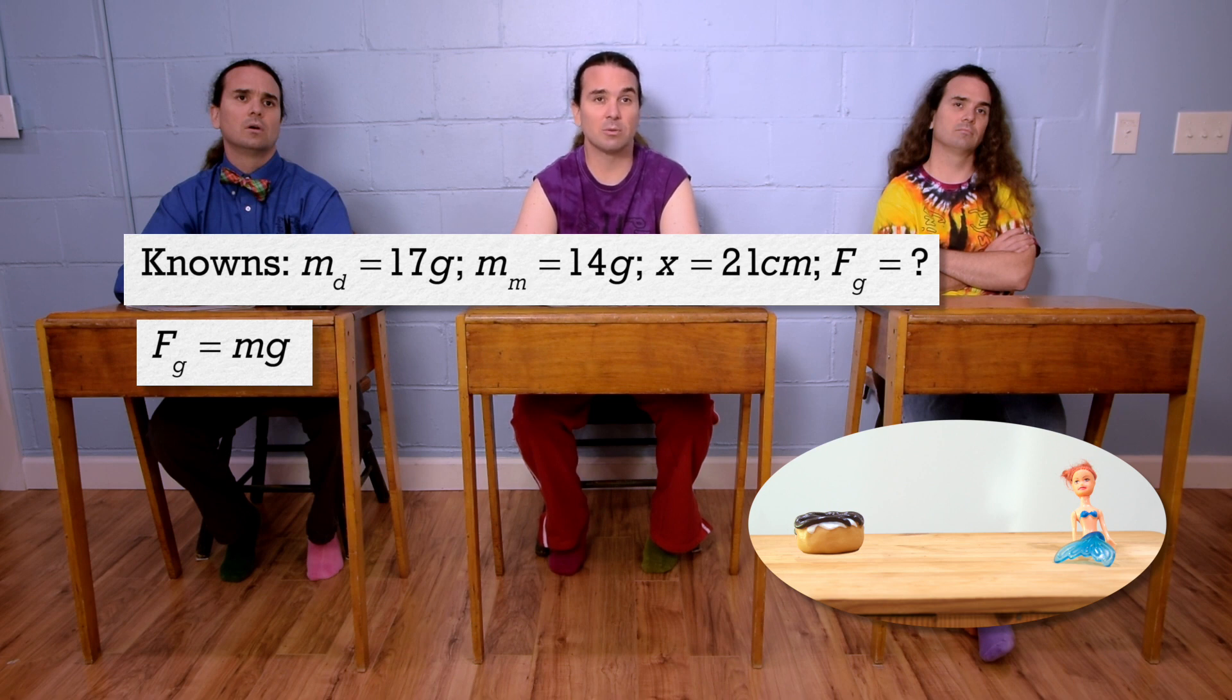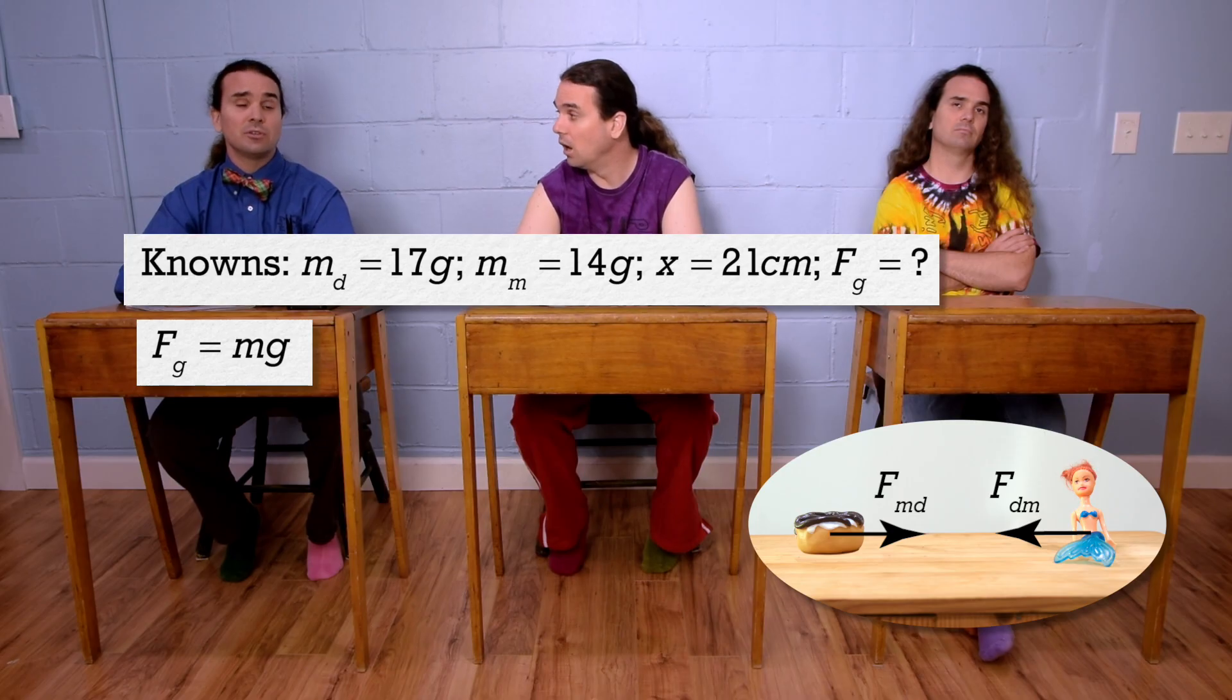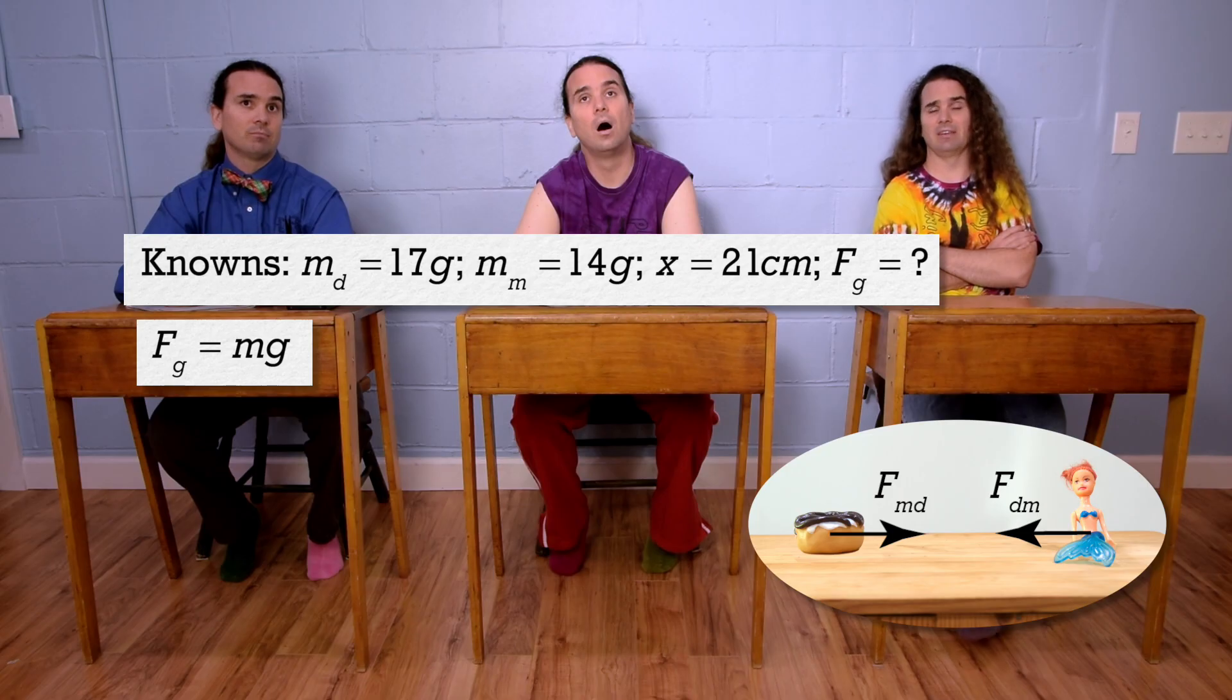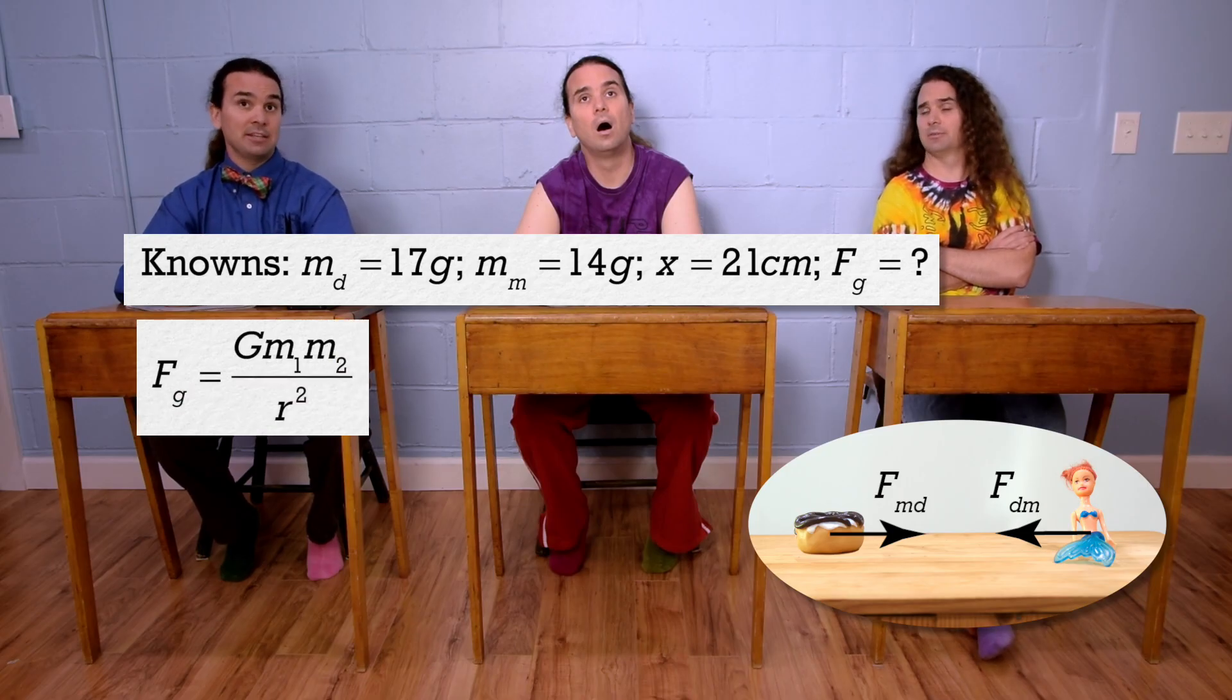We need the force of gravitational attraction between the mermaid and the donut. Yeah, we need to use Newton's universal law of gravitation. The big G equation.